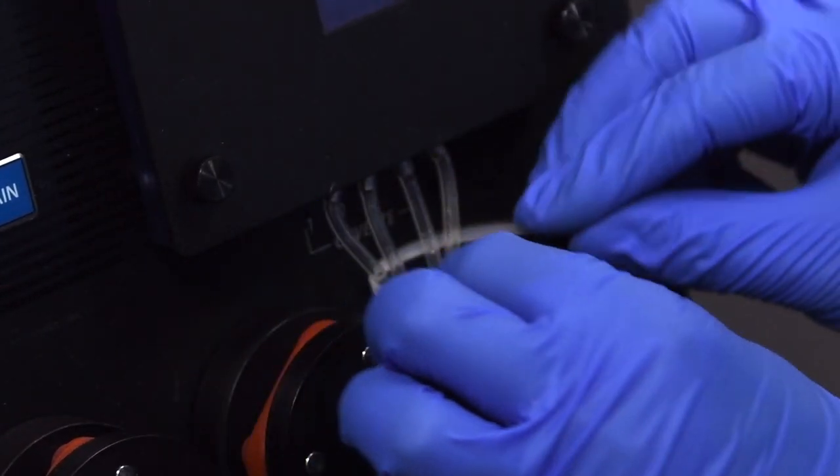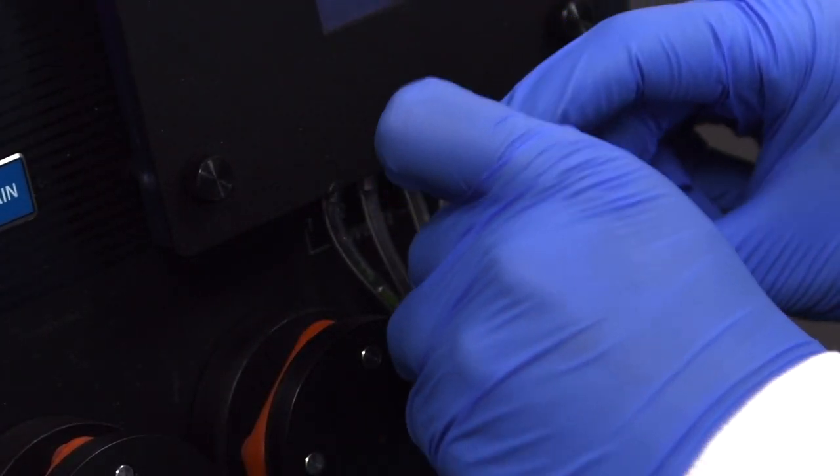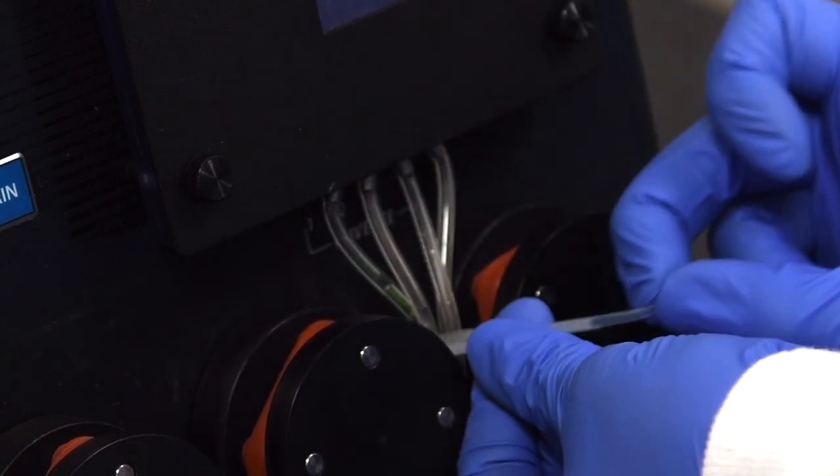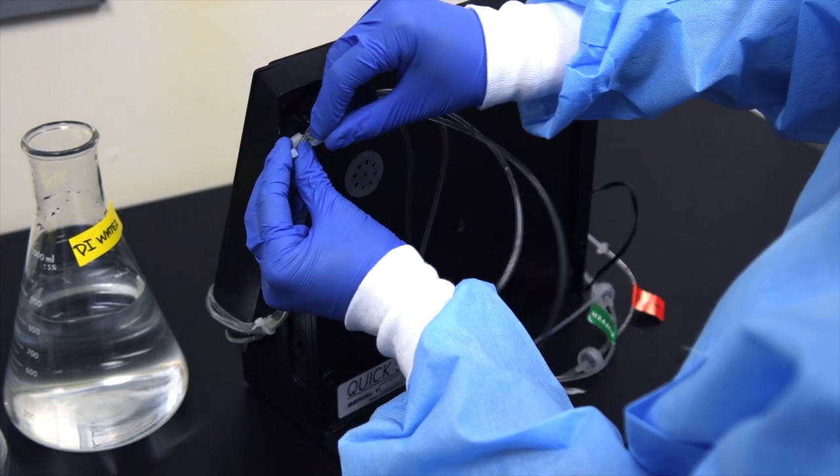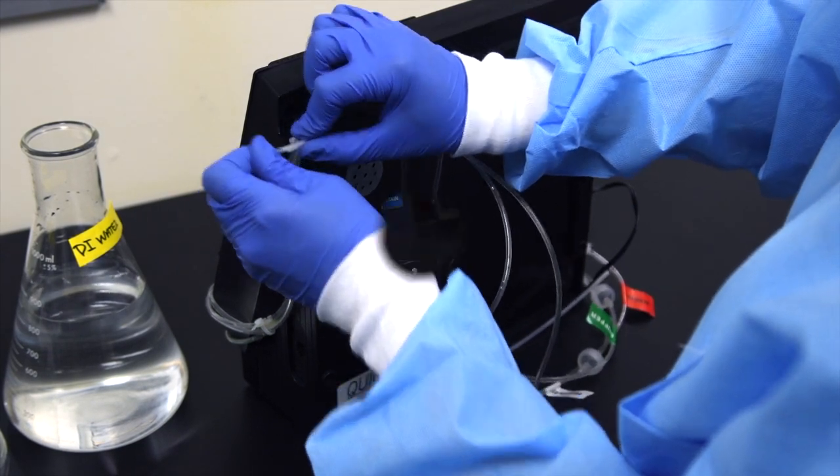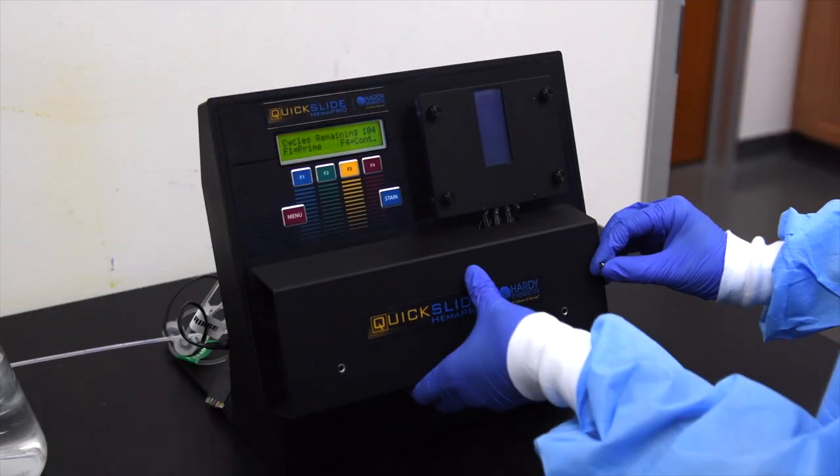Once the cannula lines are correctly installed, apply zip ties to the indicated places on the machine. This will ensure that the lines stay out of the way and can be contained neatly under the front panel. Now replace the front panel.